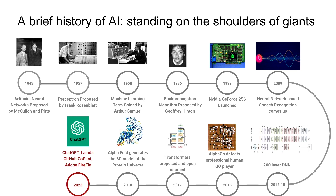Then we had NVIDIA's GeForce 256 as a GPU launched in 1999. Of course, NVIDIA is now heading out to become a $5 trillion company, perhaps the most valued — but all this started a long time ago. Neural network-based speech recognition came up in 2009, and 200-layer neural networks emerged from 2012 to 2015. Then 2015 was marked by AlphaGo defeating a professional human Go player, drawing more public attention to neural networks. The real big breakthrough triggering this new era in AI happened in 2017 in a paper by authors from Google, called 'Attention is All It Takes.'